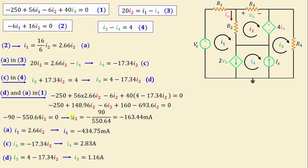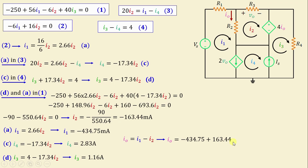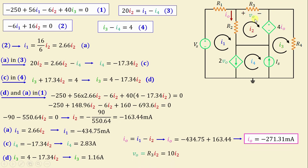Now let's find IO and VO. We already established that IO = I1 − I2, so IO = −434.75 + 163.44 = −271.31 mA. According to Ohm's law, VO = R3·I2 = 10·I2 = 10 × (−163.44 mA) = −1.635 V.